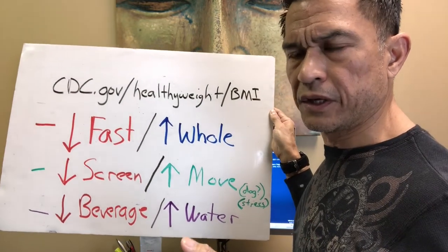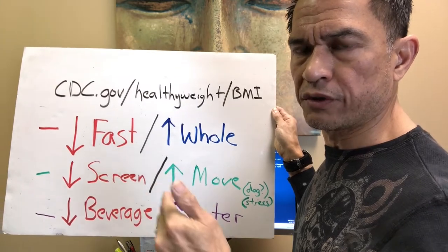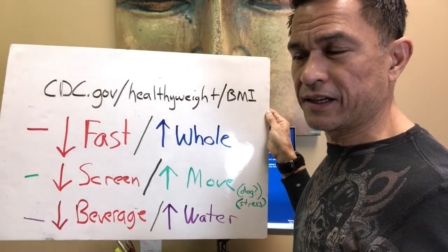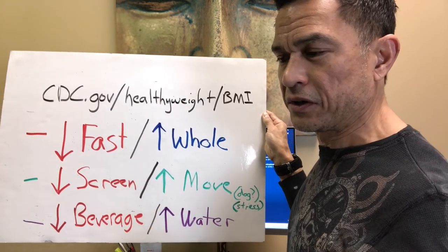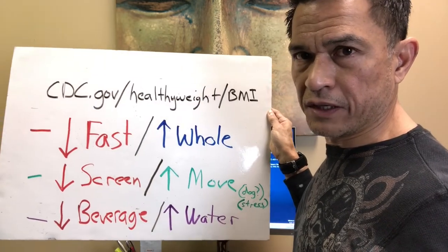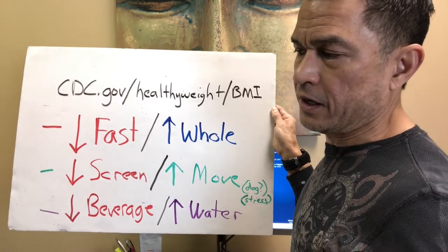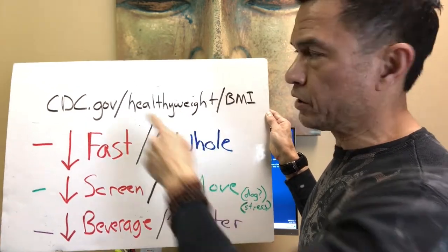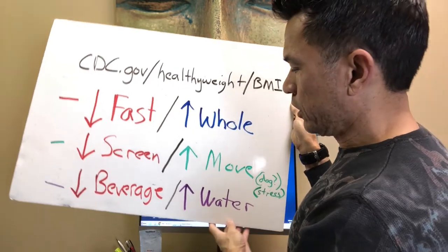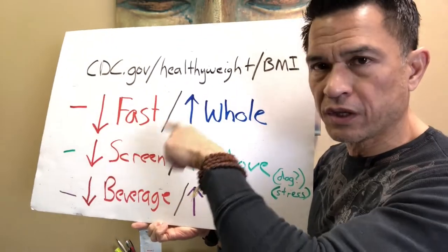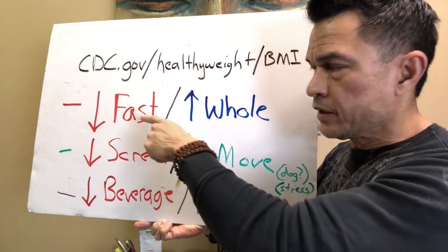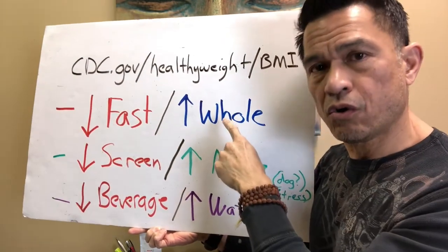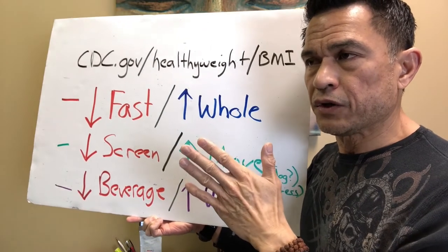For adults, if your BMI is around 23, that's cool. Most BMI calculators go up to 25. But you can have a skinny fat guy as you get older — I'll probably do another video on that. For kids, height and age change, so the CDC calculator is really useful. As a spoiler, these are the three things I'd suggest: decreasing fast food, increasing whole food.